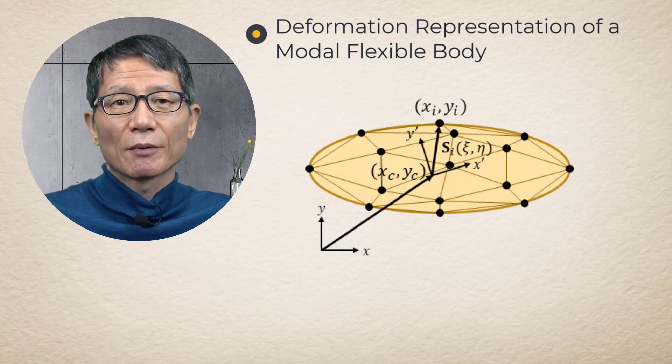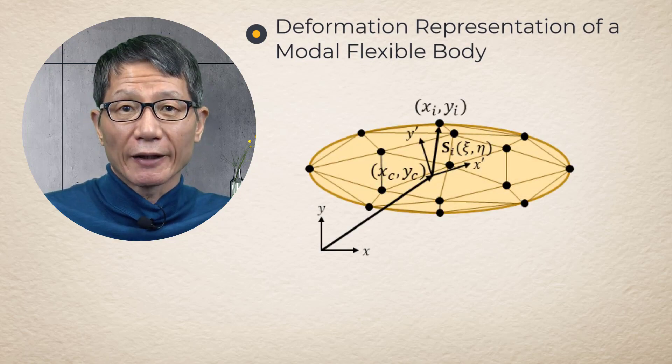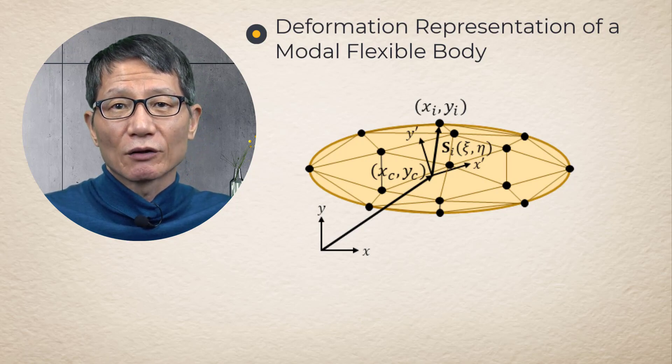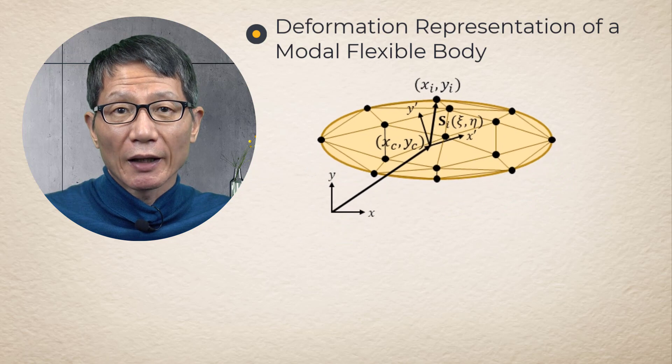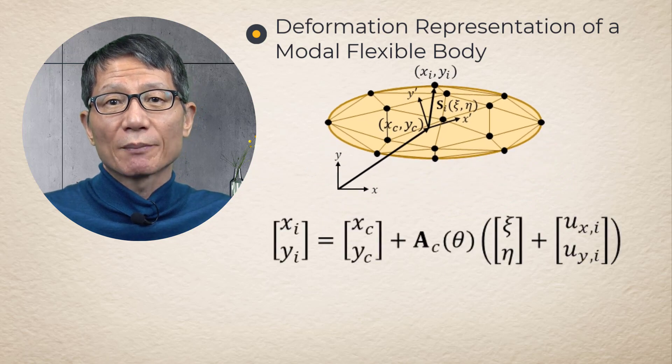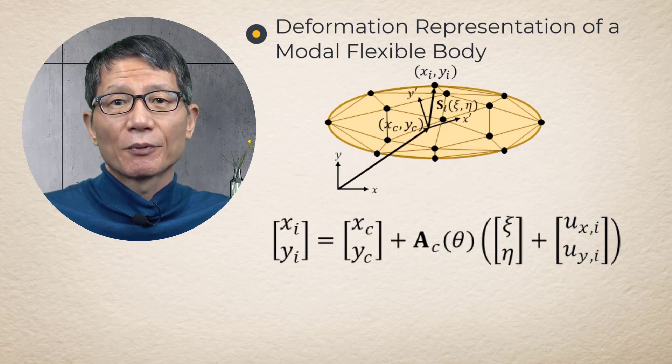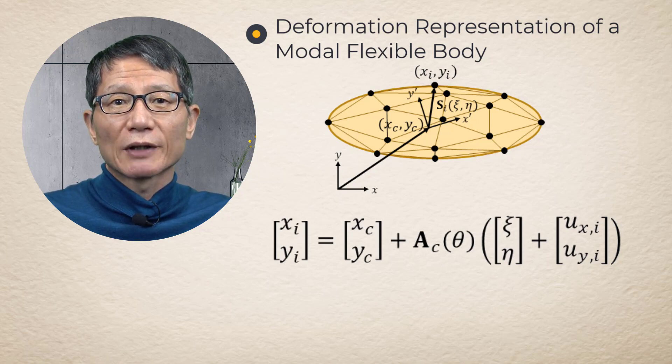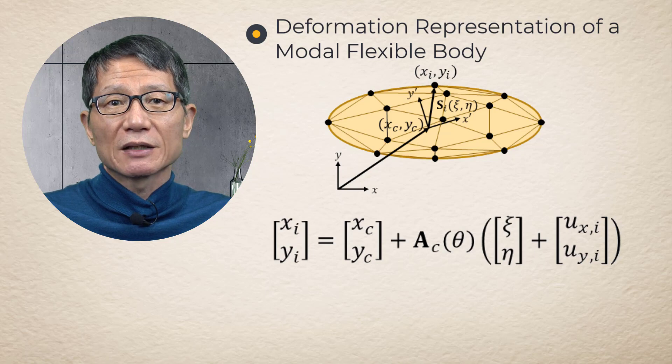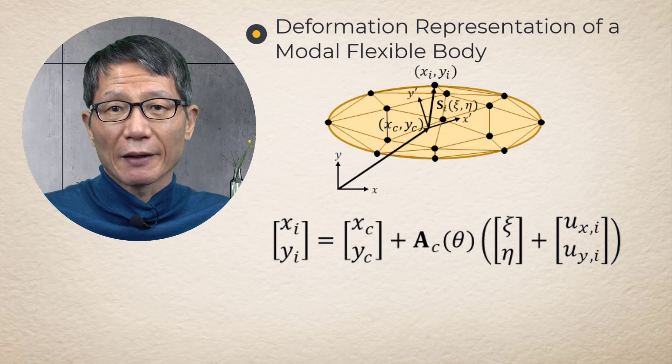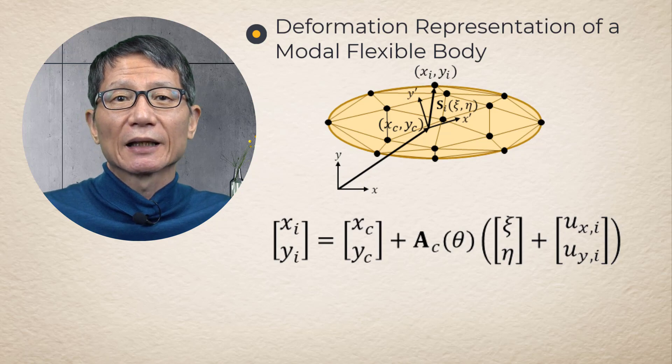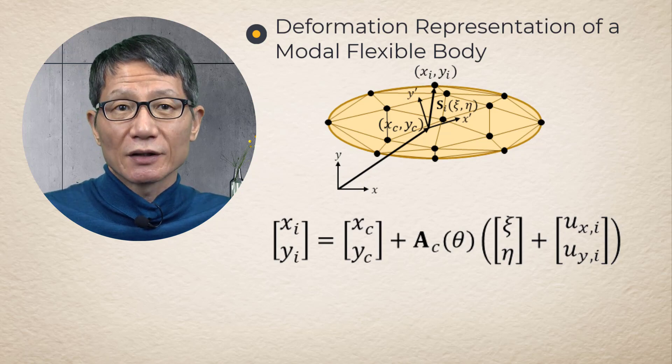Suppose we have a modal flexible body in a plane. A nodal position of a modal body in the global plane can be obtained by adding the original position vector and deformation vector U'. Please pay attention that deformation U' is expressed in the body reference frame. Therefore, a nodal position of a modal body can be located as in this equation.